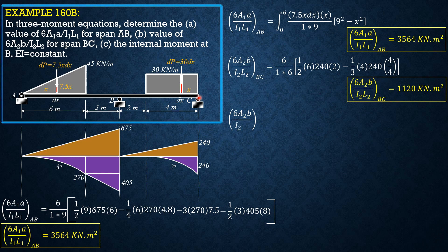Then, 6 area 2B over I2L2 is equal to integral from 0 to 4 of 30 dx times x over 1 times 6 quantity 6 square minus x square, where B is x.